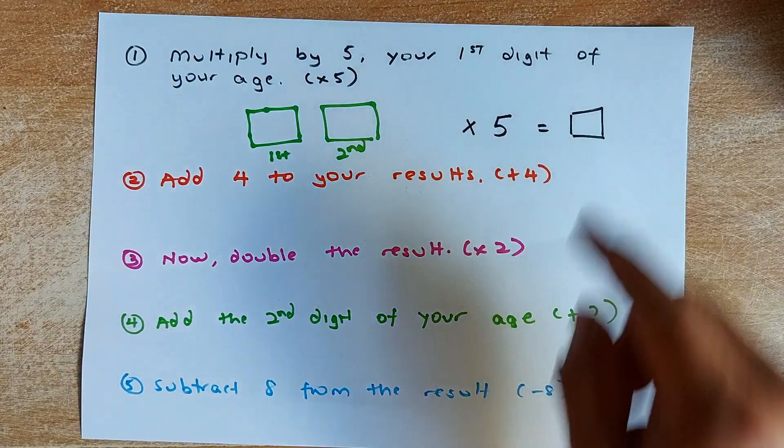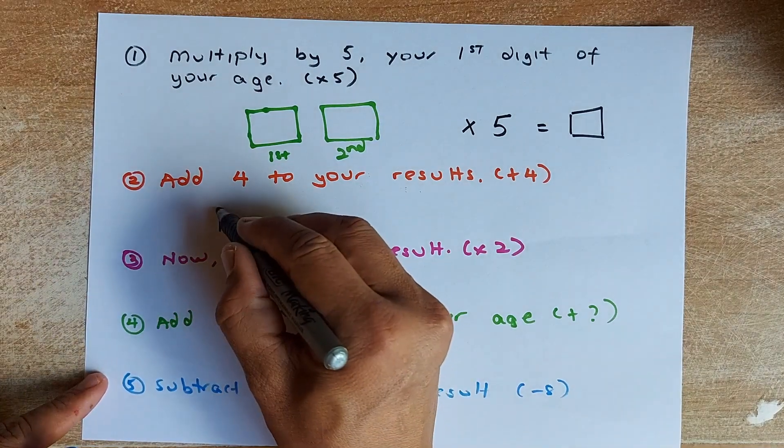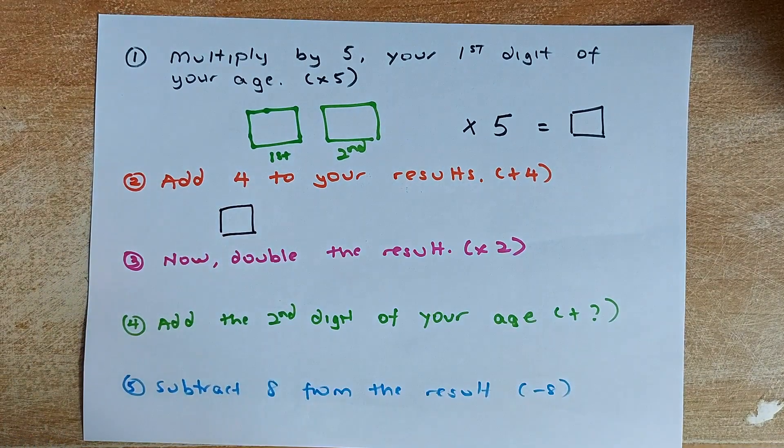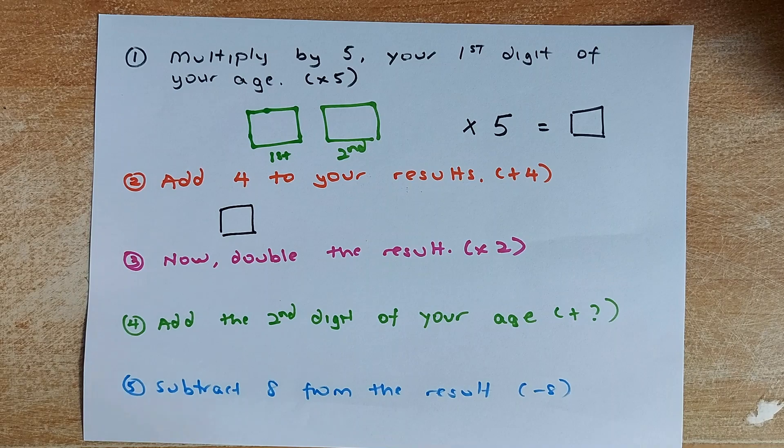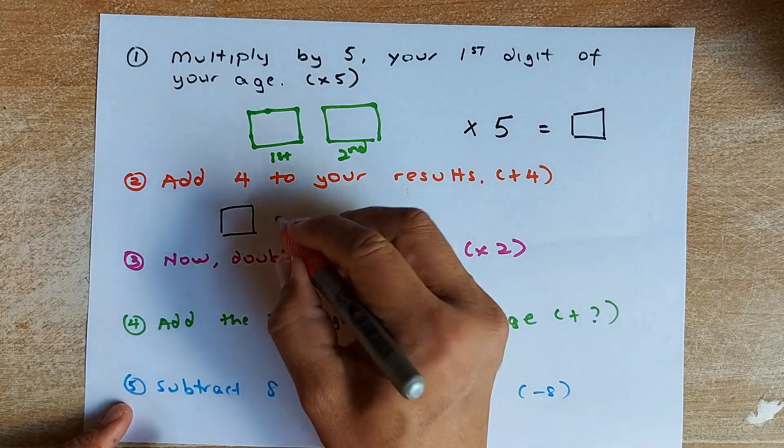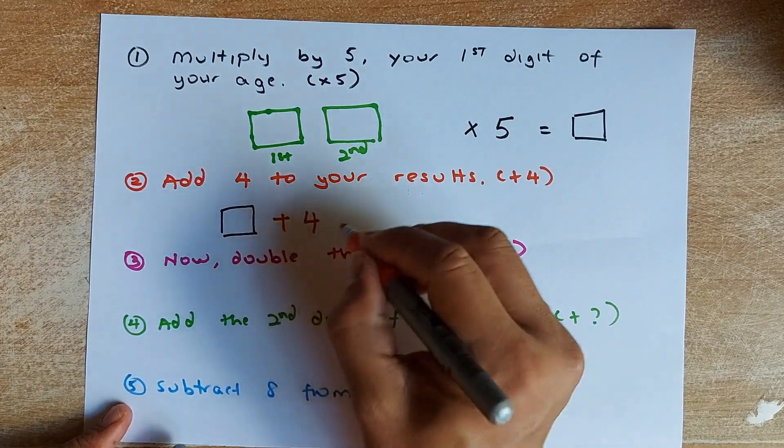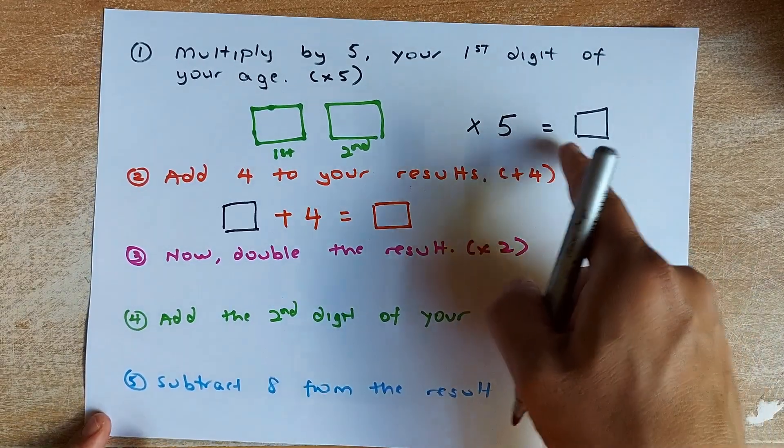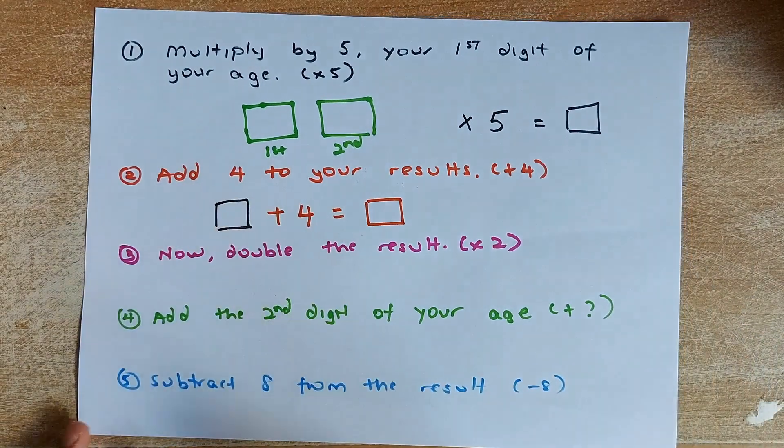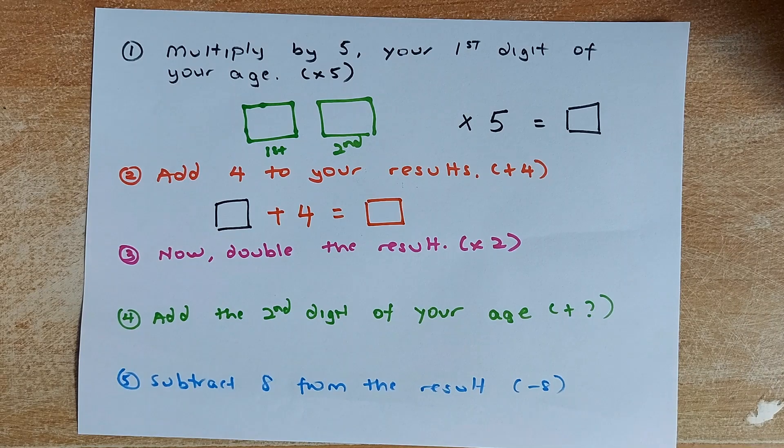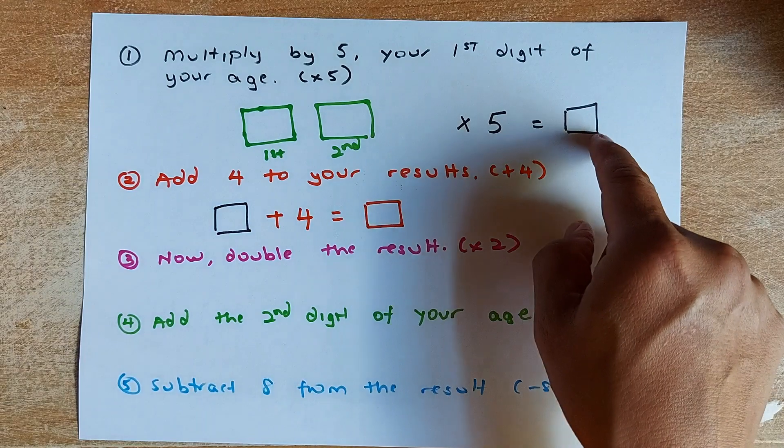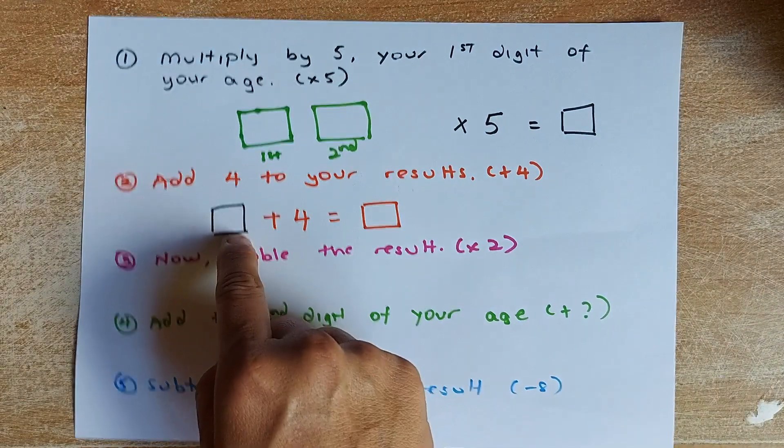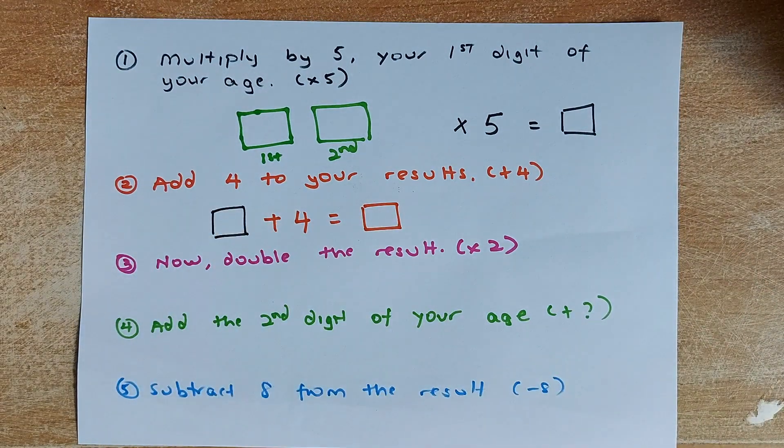Now, from the black box, we are going to calculate the next one. We are going to add that answer to 4. Now you get an orange box. So that answer plus 4 will give you the second answer. So first, you take the first digit, multiply by 5, and then that answer you are going to add by 4, and then you are going to get the orange box.